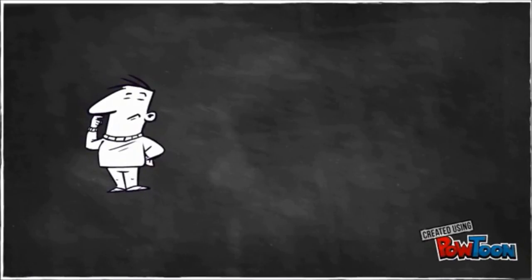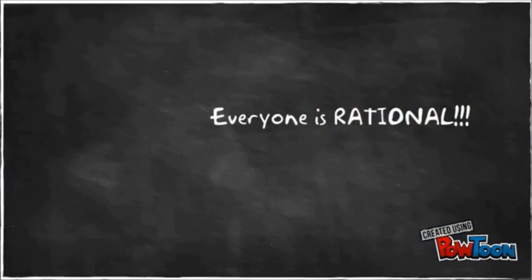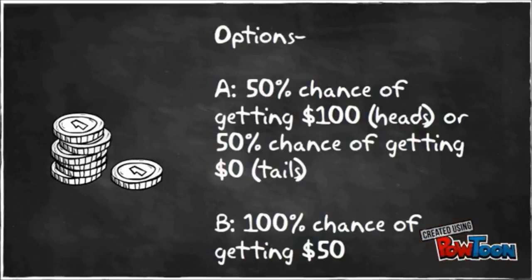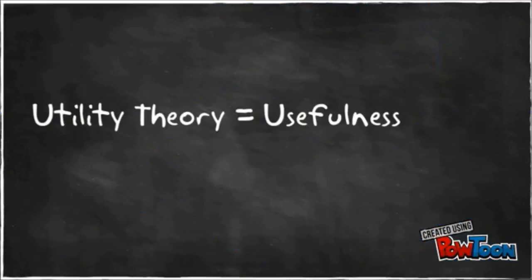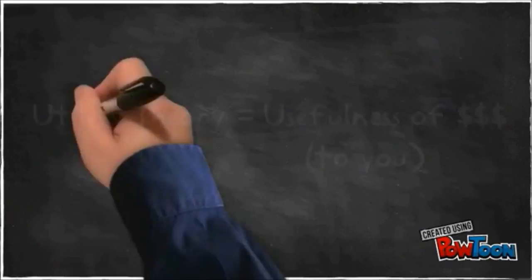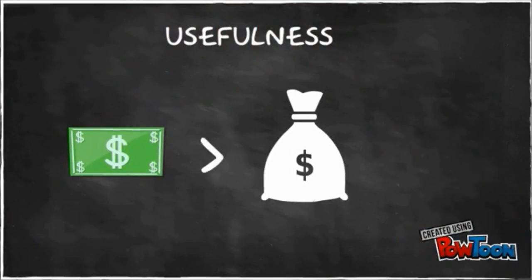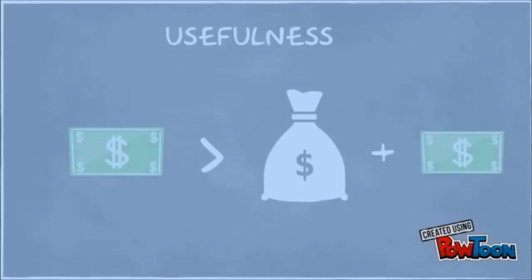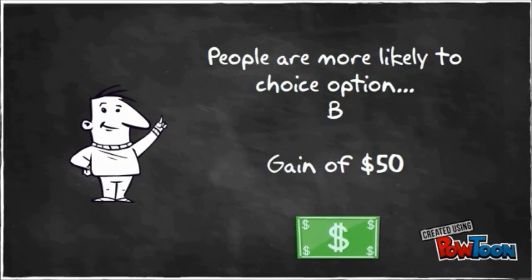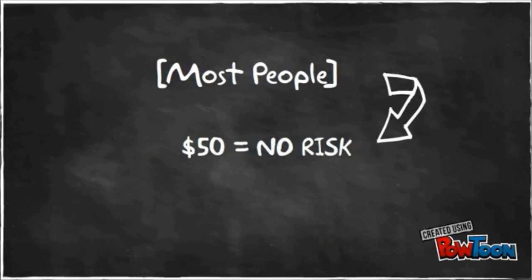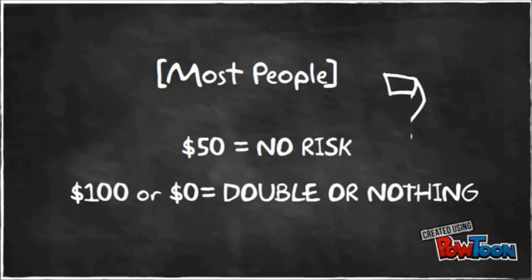The theory is based on the assumption that everyone is rational in all the decisions that they make. For example, you are given the choice to either flip a coin — heads is $100 and tails is $0 — or the choice to gain $50. According to Utility Theory, people are more likely to choose the gain of $50. Utility Theory focuses on how useful the money is to you; a gain of $1 means more to you than if you had a million dollars and gained a dollar. People choose the $50 option because it has the highest utility since it carries no risk, rather than the possibility of receiving double or nothing with a gamble.